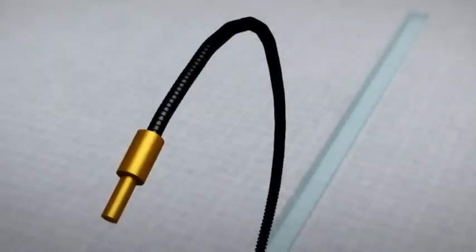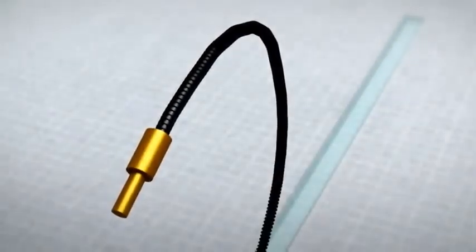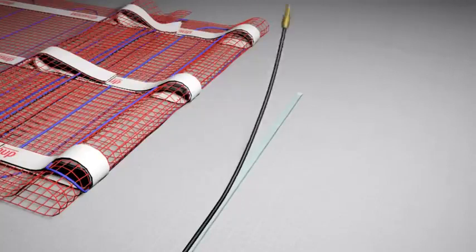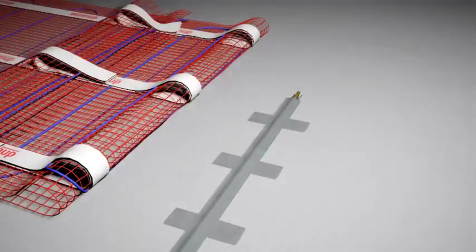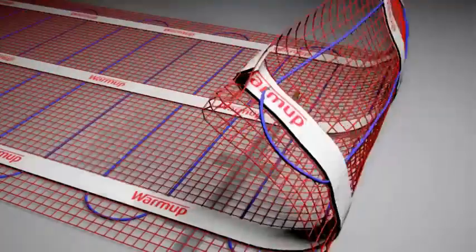The floor probe measures the actual temperature of the floor, allowing complete, accurate control of the system. If the probe or the power cable sit proud of the subfloor, you may wish to chisel out short channels in the subfloor. Tape down the floor sensor at least 300mm into the heated area. Position the floor probe evenly between two of the heating elements, making sure not to cross the heating wire.